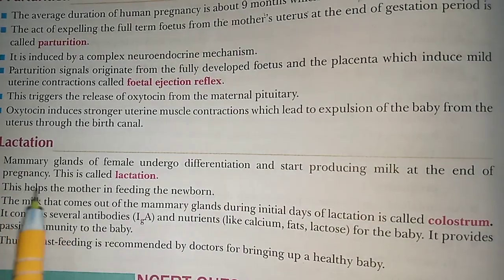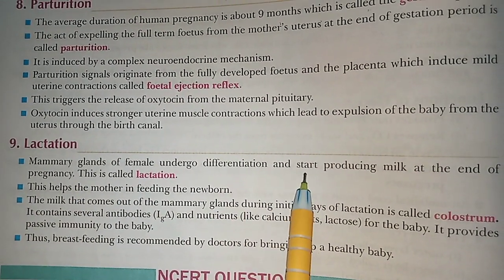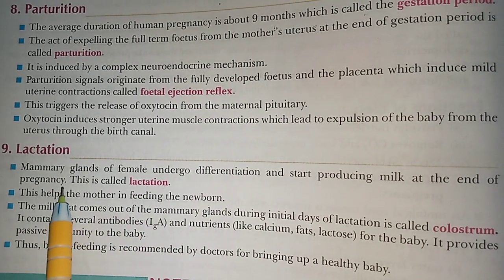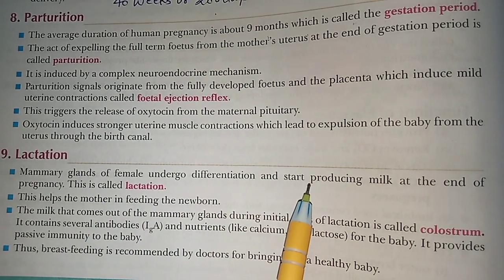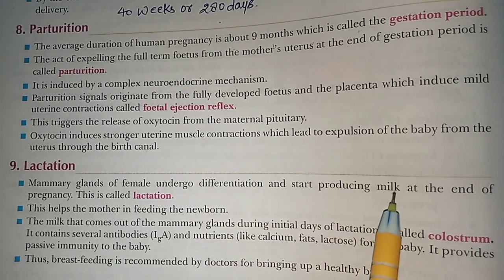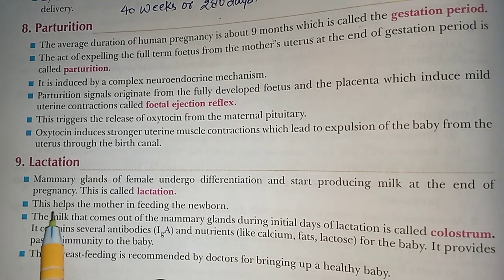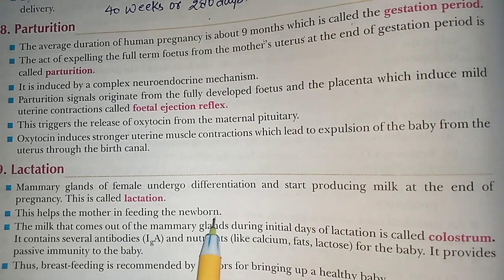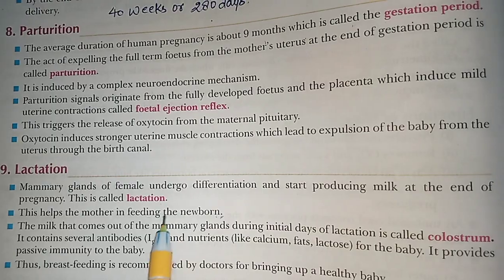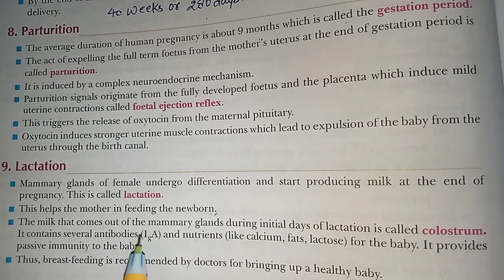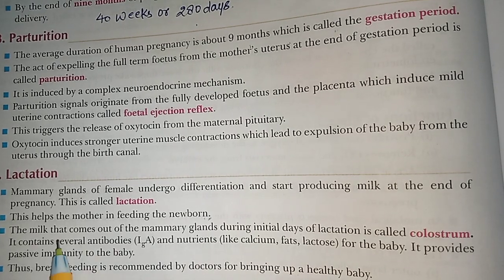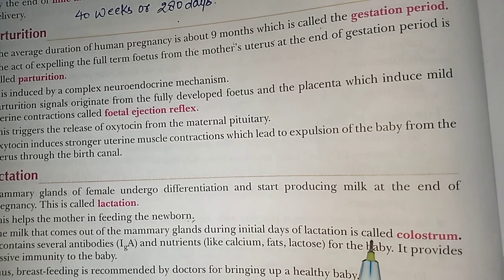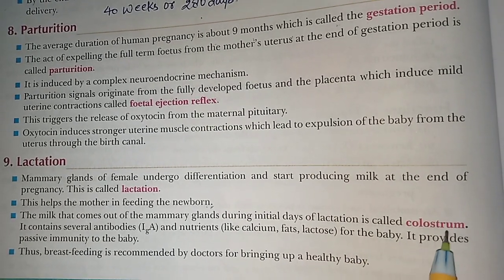Lactation: mammary glands of the female undergo differentiation and start producing milk at the end of pregnancy. After delivery, production and secretion of milk starts — this is called lactation. This helps the mother in feeding the newborn. The milk that comes out of the mammary gland during initial days of lactation is called colostrum. اس شروع شروع کے نکلتے ہوئے milk کو colostrum کہا جاتا ہے۔